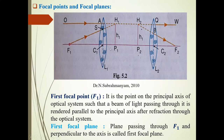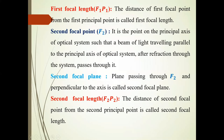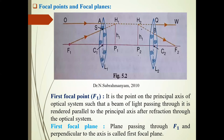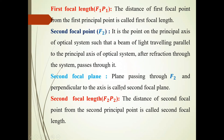Now, second focal point F2: it is the point on the principal axis of the optical system such that a beam of light traveling parallel to the principal axis, after passing through the system, passes through it. This ray traveling parallel to the principal axis, after passing through this optical system, emerges out and passes through F2. This F2 is the second focal point. A plane passing through the second focal point F2, perpendicular to the principal axis, is called the second focal plane.